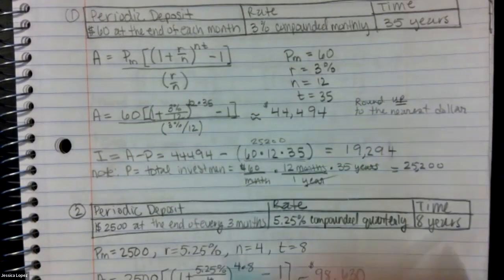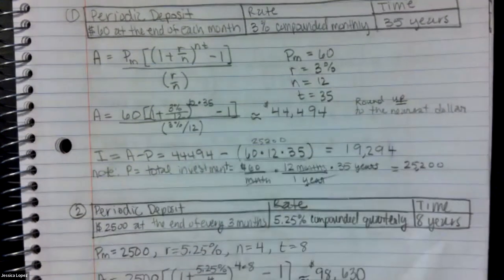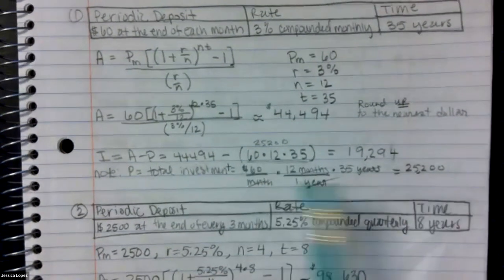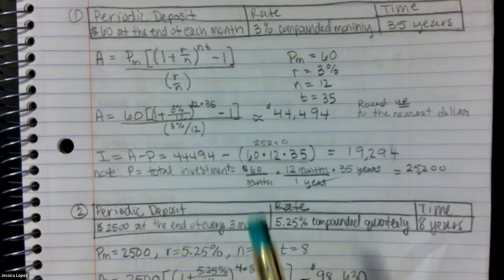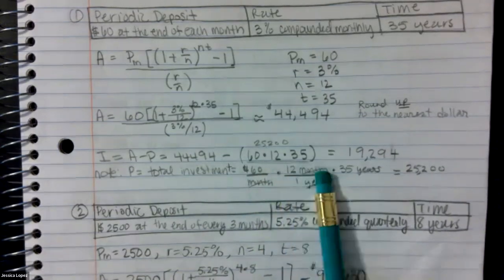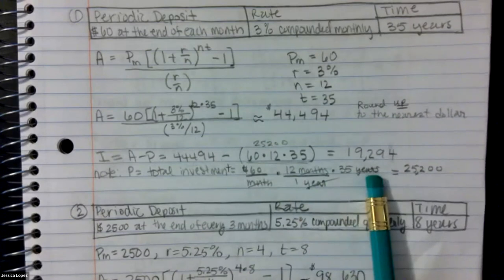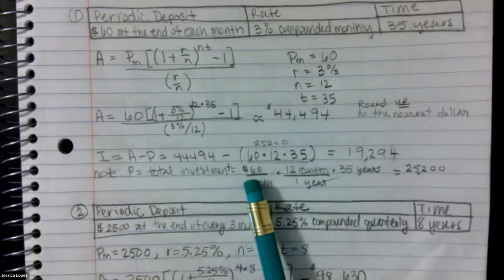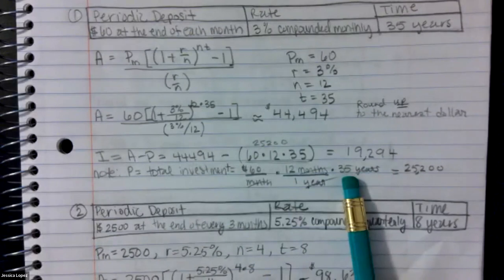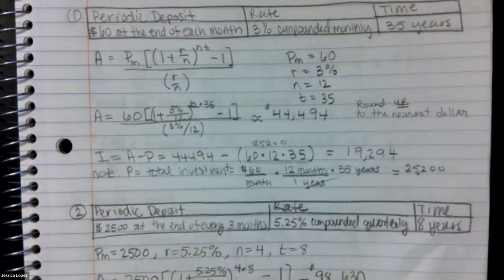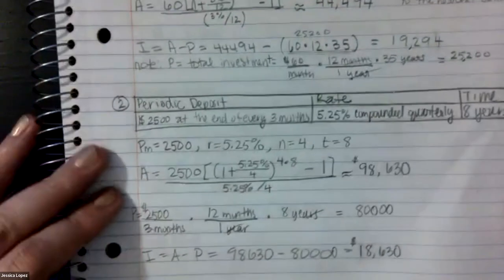I'm just showing you how I came up with that number. So $60 per month times 12 months per year, times 35 years — all the units cancel — and you just end up with 60 times 12 times 35, which is this amount. It's just elaborating on what's in that parenthesis.